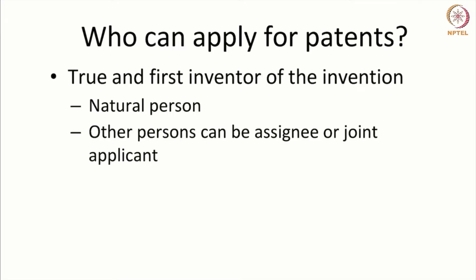A patent can also be applied for by an assignee of the true and first inventor. The true and first inventor may invent the invention and assign it to another person. In most cases, employees who work for an organization — a company or research organization — do not own the invention. The terms of their employment state that the invention shall be owned by the organization. So the employee's name figures as the inventor, whereas the applicant will be the company or organization.